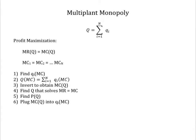And finally, plug the level of marginal cost at the profit maximizing output level back into the supply functions for each plant. We'll work two examples to see how this plays out.